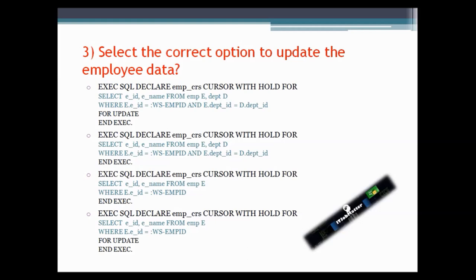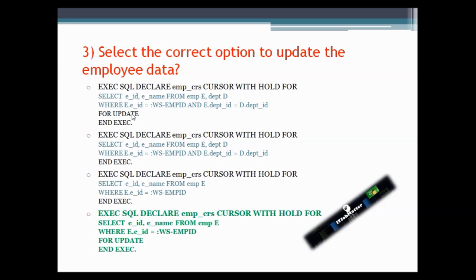This question asks to select the correct option to declare a cursor for update of employee data. The correct answer is the option using the FOR UPDATE keyword, because the FOR UPDATE keyword is mandatory to declare an updatable cursor. Another option could have been considered, but it uses a JOIN statement, and a JOIN creates a read-only cursor, so that is not the correct option.